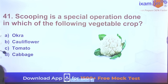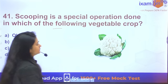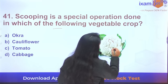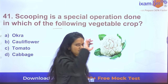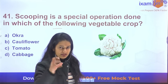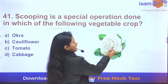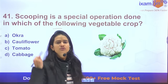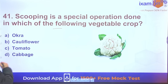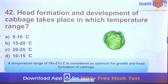Question 41: Scooping is a special operation done in cauliflower. Scooping means removing a small portion from the center of the curd — like an ice cream scoop — so that the flower initiation and formation of the flower stock occurs more easily.